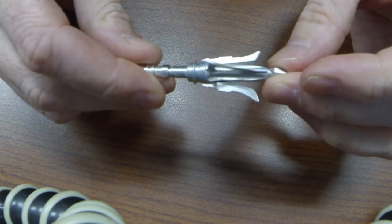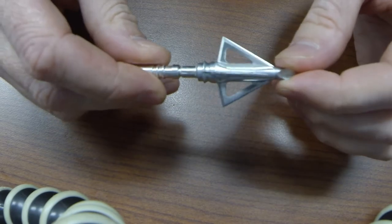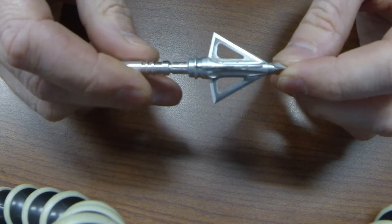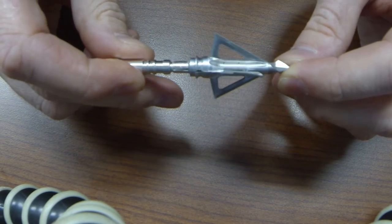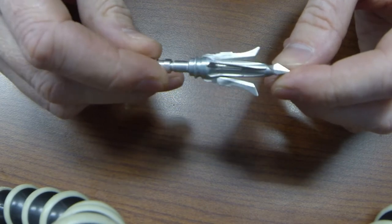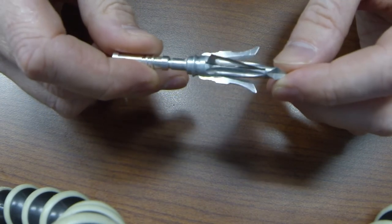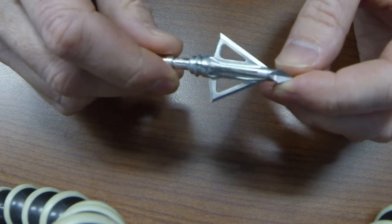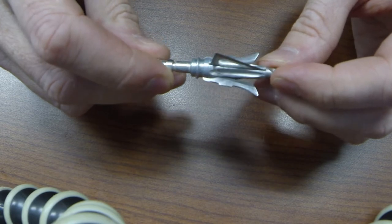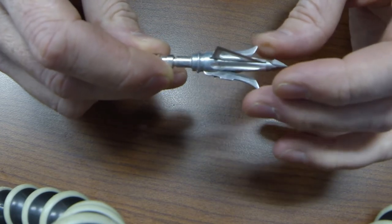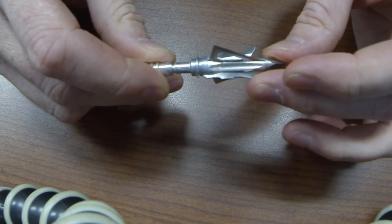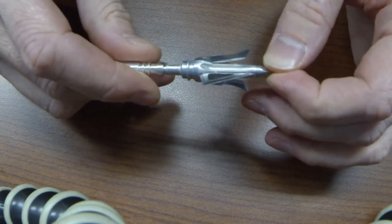This particular broadhead has been lodged into a log and shot into a block target somewhere between 20 and 30 times. It's held up very well but it's definitely starting to show some wear. I'm going to try to take it apart and see if there's anything jammed in there to maybe get this blade back in straight. I really don't want to have to buy replacement blades for essentially a practice broadhead.